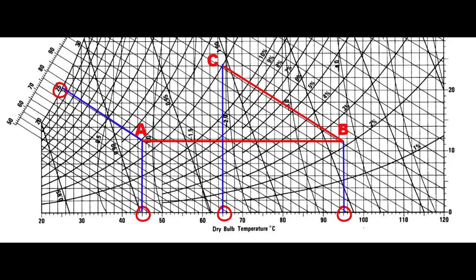The air coming out of the dryer at point C is then moved through a dehumidifier. Humidification and dehumidification processes are shown by a vertical line on the psychrometric chart, so the humidity is going to decrease. We follow the vertical line from C to D, where point D is on the 10% relative humidity curve. So our process is described as: A to B heating, B to C drying, and C to D through the dehumidifier.